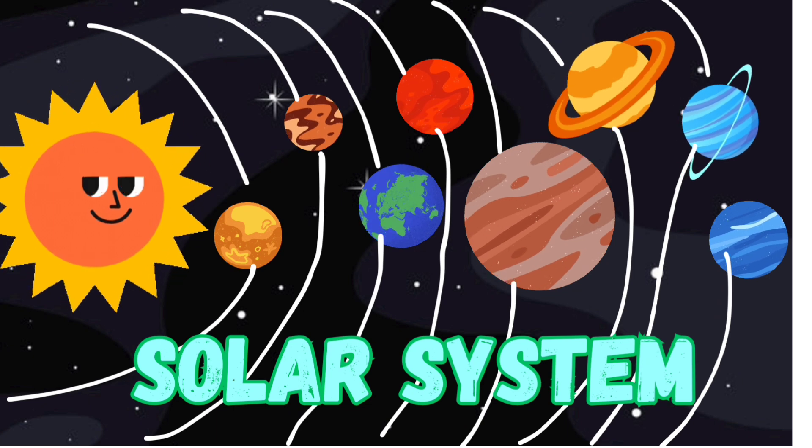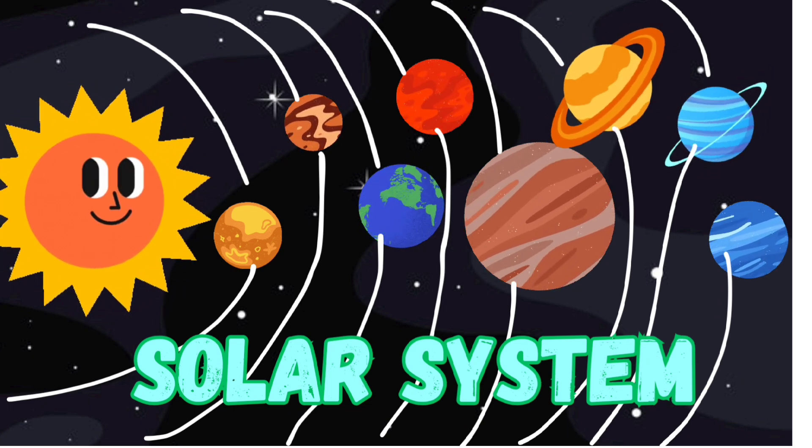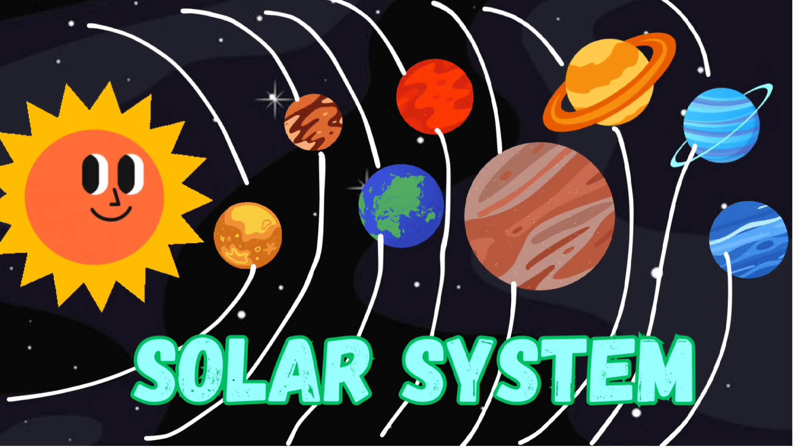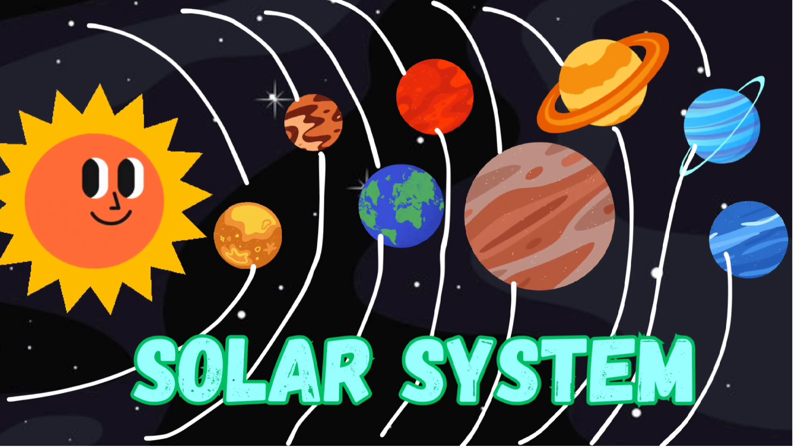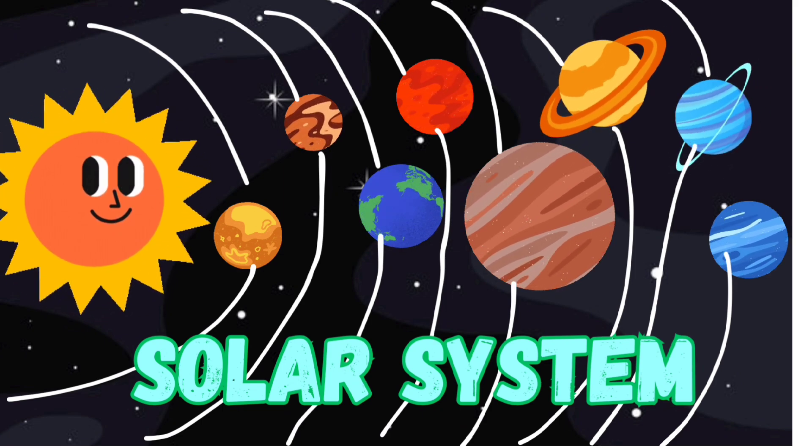Sun, Mercury, Venus, Earth, Mars, Jupiter, Saturn, Uranus, Neptune. These are our solar system. Thank you for watching my video.